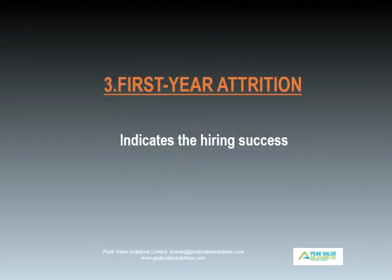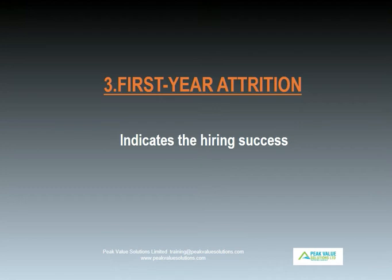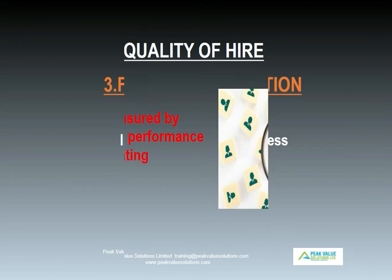First-year attrition. This is a key recruiting metric and indicates the hiring success. Candidates who leave in the first year of work fail to become fully productive, and this can be costly. The employer can terminate the contract, or an employee can leave on their own accord. The former is often an indicator of bad first-year performance or bad fit with the team. The latter is often an indication of unrealistic expectations which causes the candidate to quit. This could be due to a mismatch between the job description and the actual job, or the organization has been oversold by the recruiter.